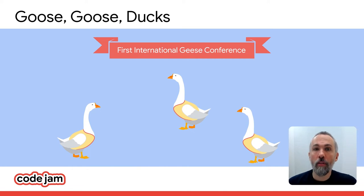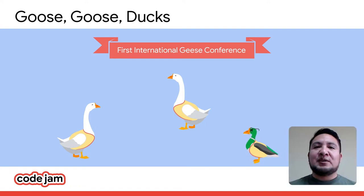What is Goose Goose Ducks about? In this problem, the ducks have infiltrated the first international geese conference. So we have a group of participants, the geese, wandering about and a number of pieces of evidence that we should use to identify the conspirators, the ducks, among them. Cool. What type of evidence do we have?